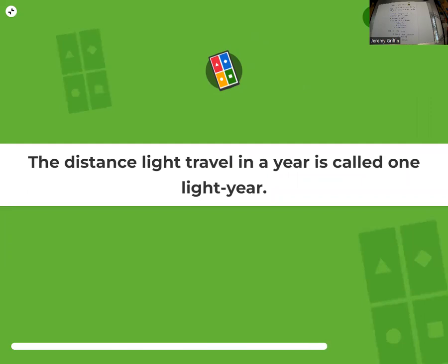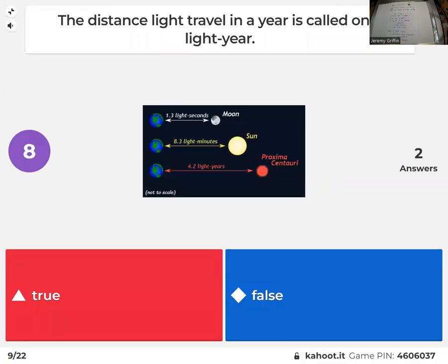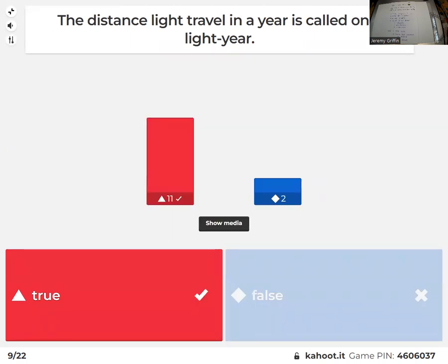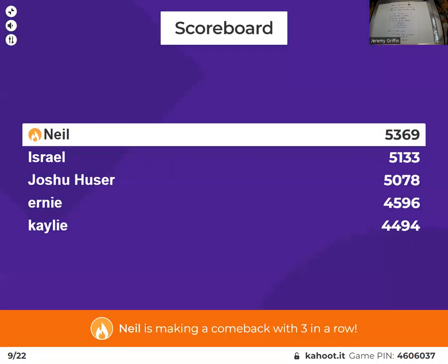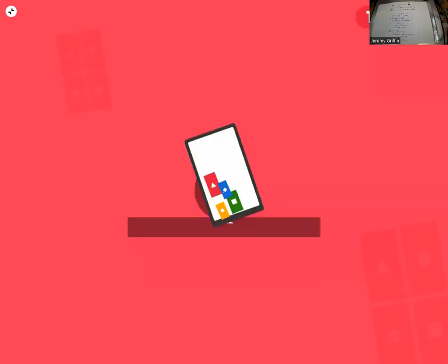The distance light travels in a year is called a light year. Look at that graphic. Yeah, that's called a light year, the distance light travels in a year. All those points.